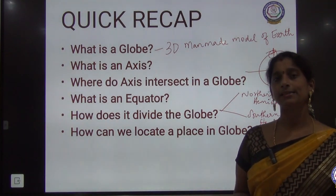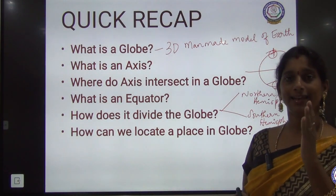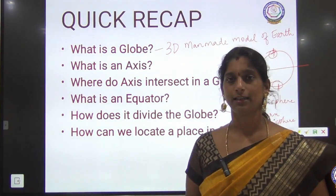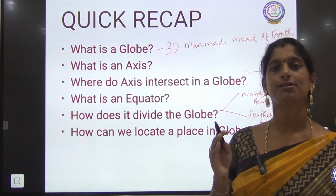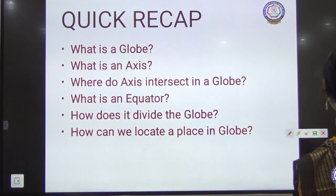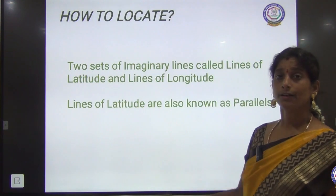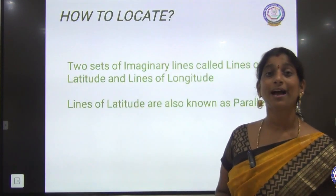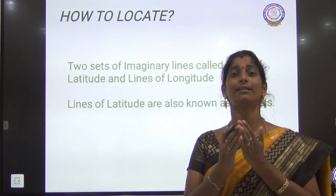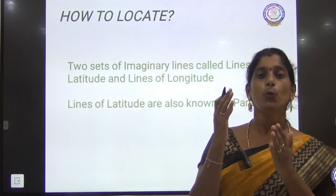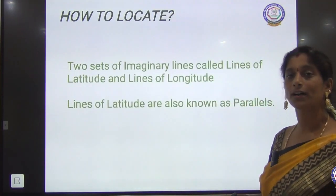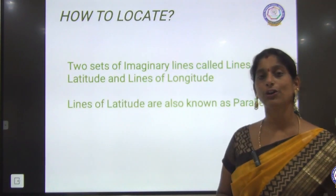How can we locate a place on a globe? With the help of the lines drawn on the globe — the latitudinal lines and the longitudinal lines. To locate a place, there are two sets of imaginary lines. These lines are not available on the actual structure of the Earth, but they are marked on the globe.